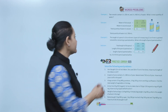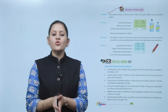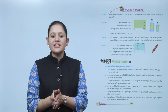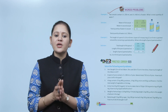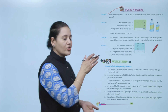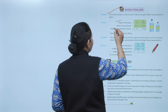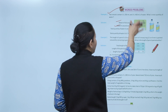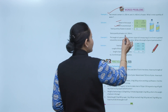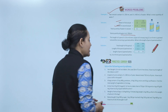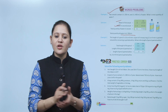Next is word problems. Two vessels contain 3 liters 250 milliliters and 3 liters 450 milliliters of water. What is the total quantity of water? Total quantity means we add. Add water in the first vessel and the second vessel together, starting from milliliters then liters. Total quantity is 6 liters 700 milliliters.